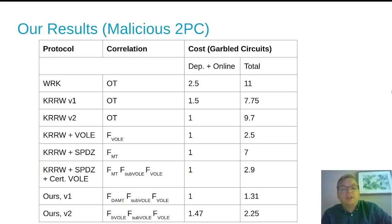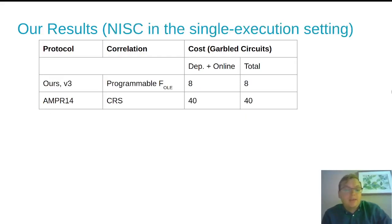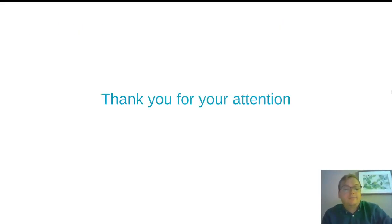So versus the old OT approach, we are at least five times faster with our best protocol and around two times faster using our techniques versus a sort of naive application of this correlated randomness. And we get eight times faster than the semi-honest cost in the NISC setting. Thank you for your attention.